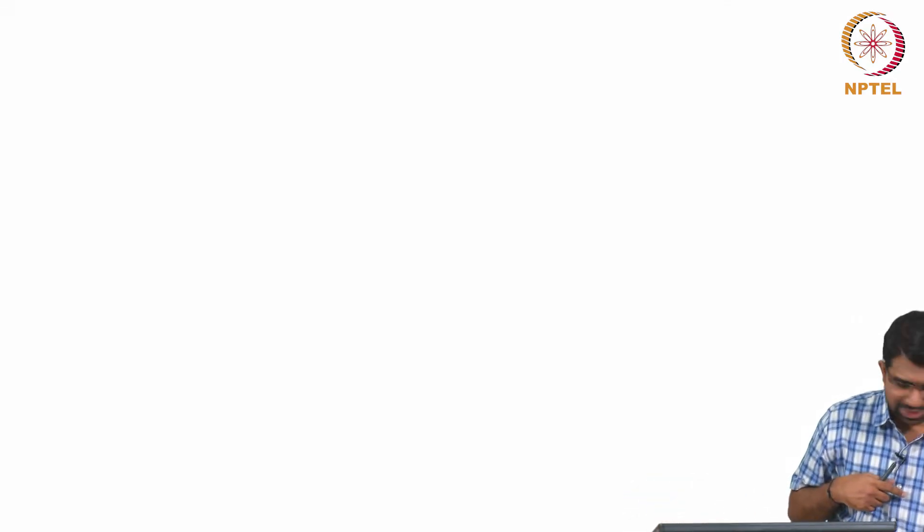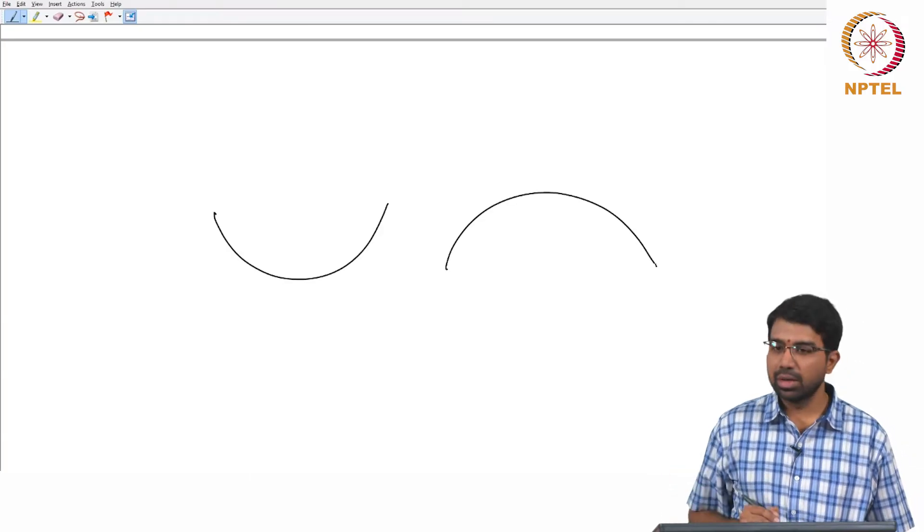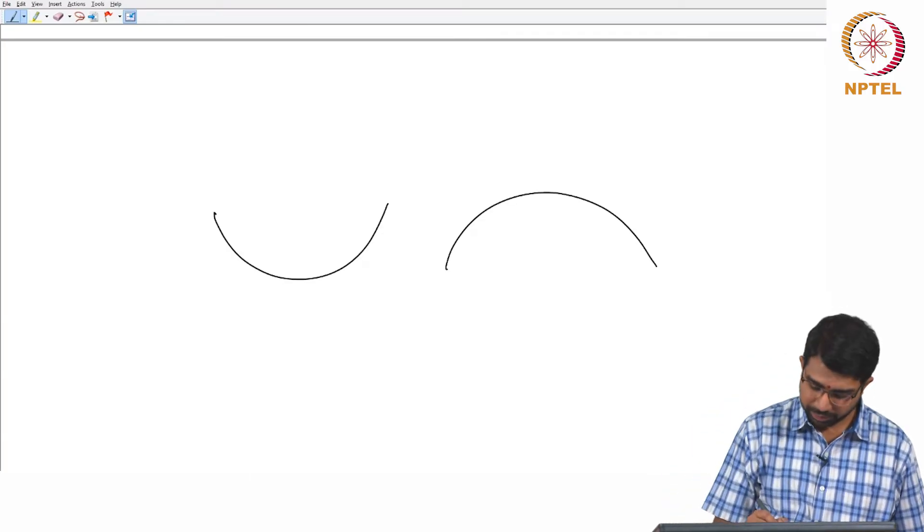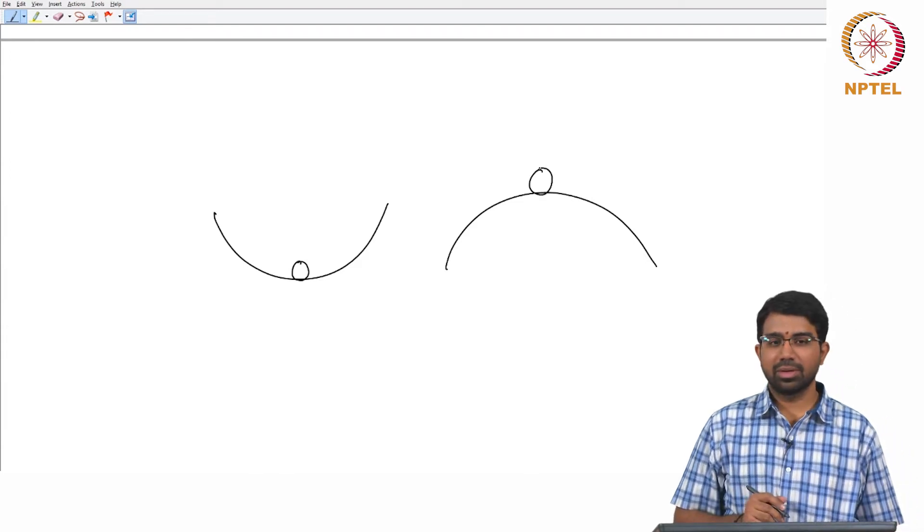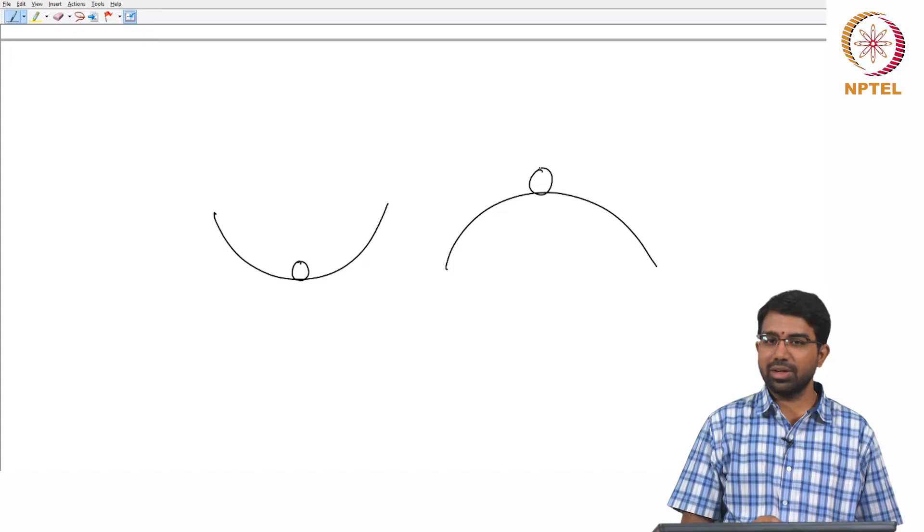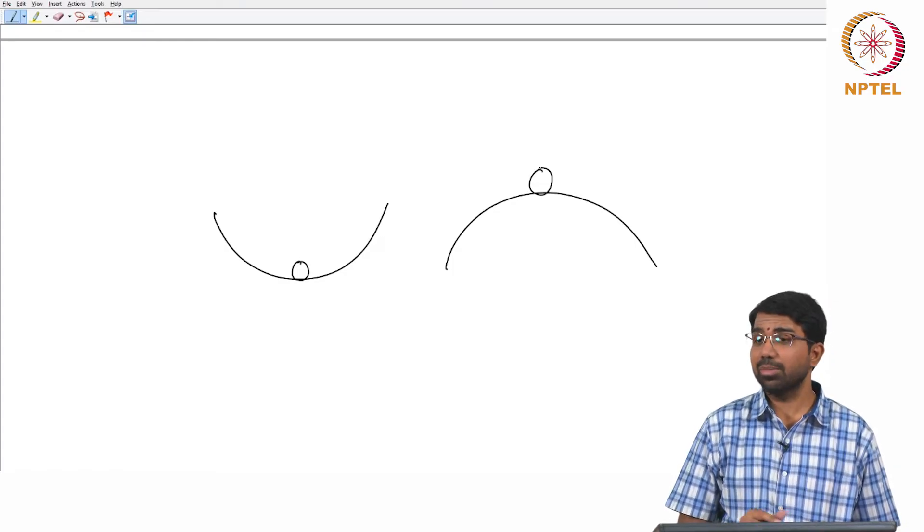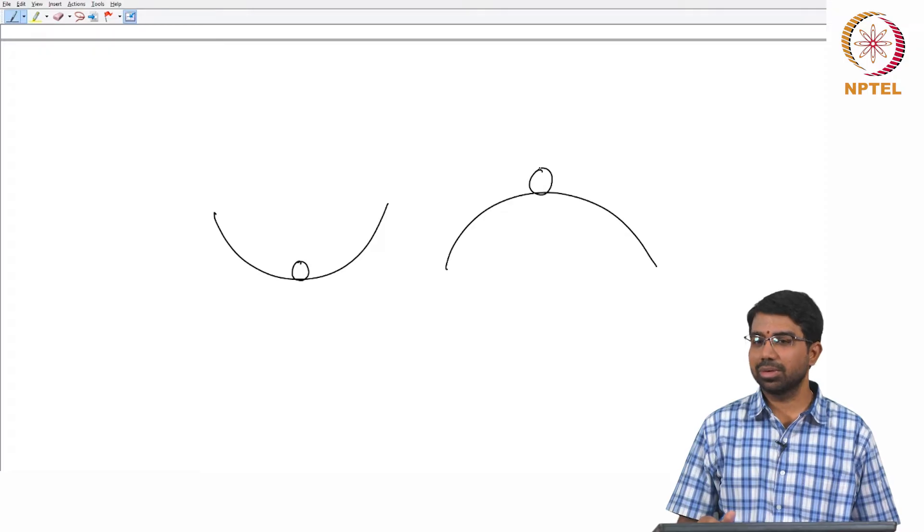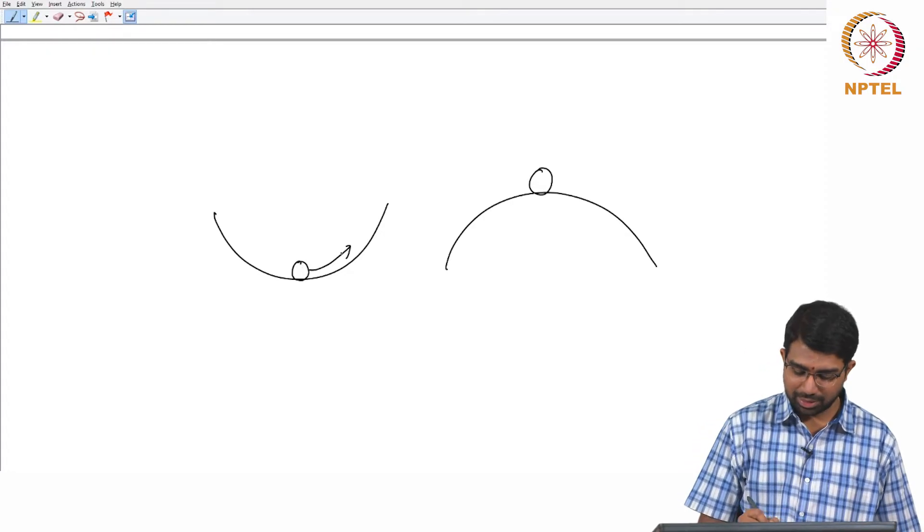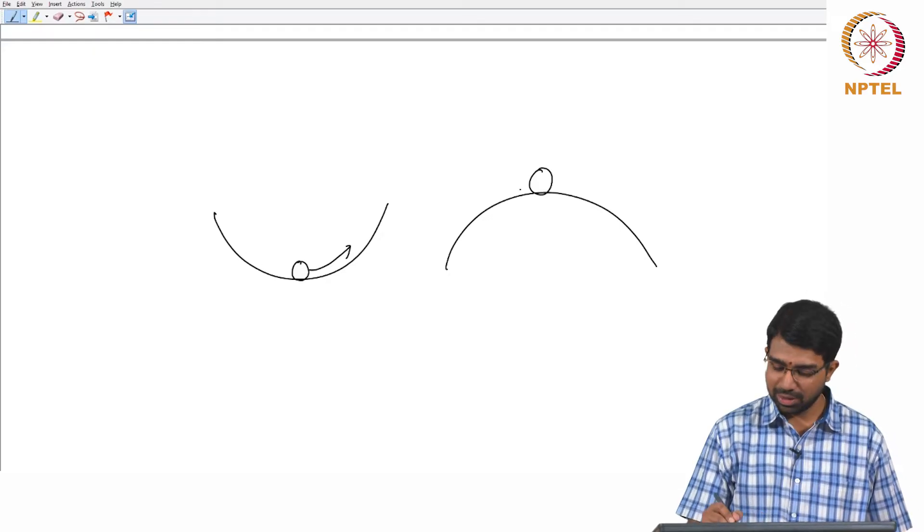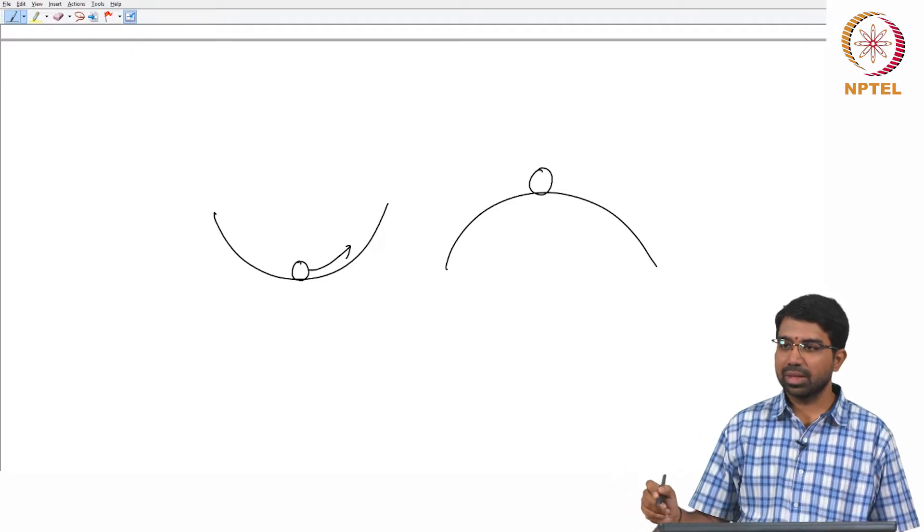And I think this is a classic example. These are two bowls. You have a ball here and a ball here. This is the one on the left is steady and the one on the right is not stable. Because you move this ball up, it will slide back here, here, here, here and finally settle at this stage.